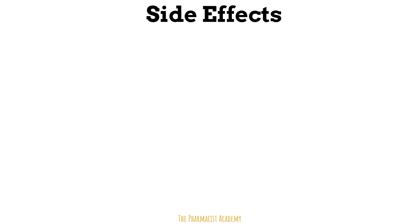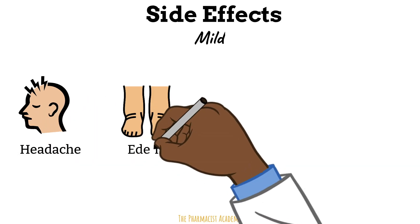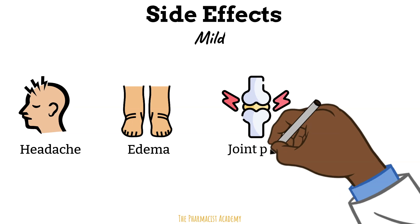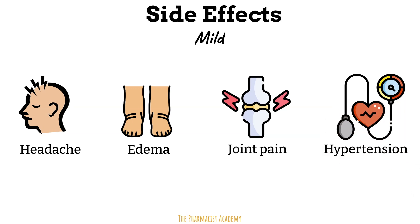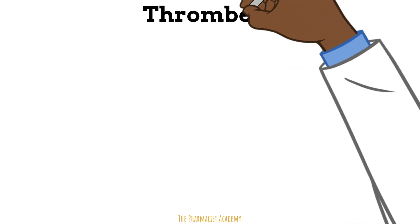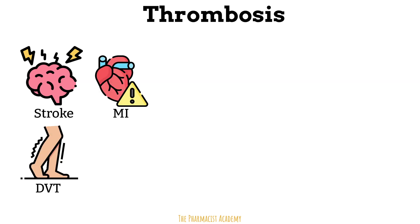The ESAs aren't benign either. Mild side effects include headache, swelling of the face and lower extremities, and joint pain, simply because the ESAs stimulate and increase activity in the bone marrow. Additionally, ESAs can make the blood very viscous by causing the body to produce a lot of red blood cells. This thickening of the blood can increase blood pressure and also put the patient at risk of blood clots, which can lead to a stroke, MI, DVT, or PE.